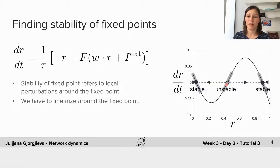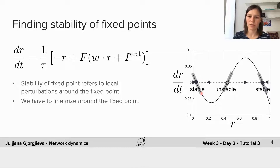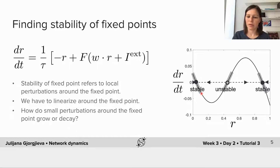However, we can also determine the stability of these fixed points in a mathematical or algebraic way by looking at the equations for how a small perturbation of the activity around each fixed point will evolve in time. We have to look at how this perturbation will behave locally around the fixed point by linearizing the dynamics around each of the fixed points. We effectively have to consider the tangents of this curve — indicated here with the gray lines — and see whether the local perturbation will be amplified or will decay to zero.